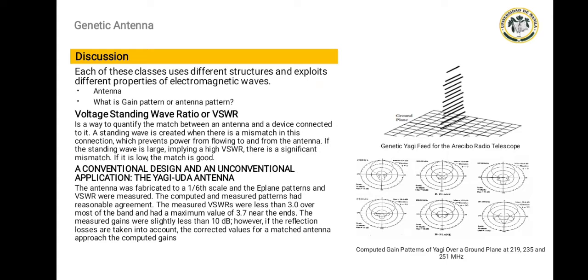I will discuss each of these classes uses different structure that explains different properties of electromagnetic waves. An antenna is a wire antenna if it is constructed from conductors that are much longer than their wires.